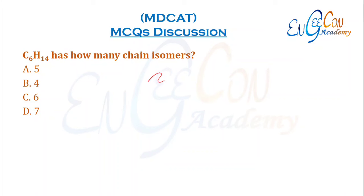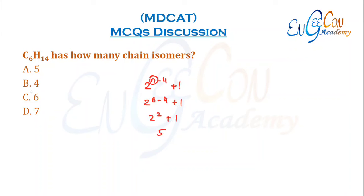C6H14 has how many chain isomers? Using the formula 2^(n−4) + 1, where n is the number of carbons: 2^(6−4) + 1 = 2² + 1 = 5 chain isomers.